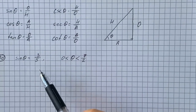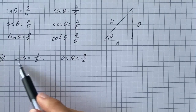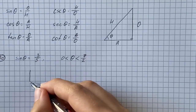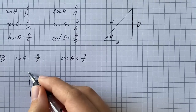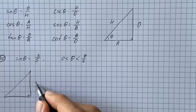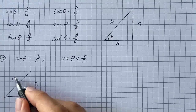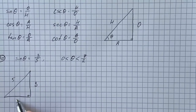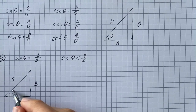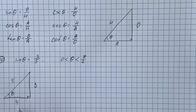Going back to sine of theta equals three-fifths, we get that the opposite side equals three and the hypotenuse is five, so the remaining side is four — this is the well-known 3-4-5 triangle. We can also find this side using the Pythagorean theorem.